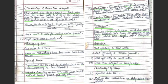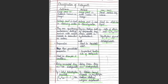Detergents are sodium, potassium, or ammonium salts of benzene sulfonic acids. Advantages of detergents over soaps: they work in hard water, can be applied on woolen garments, and work in acidic water. Detergents are classified into three categories: cationic (large part bears a positive charge), anionic (bears a negative charge), and non-ionic (no charge).